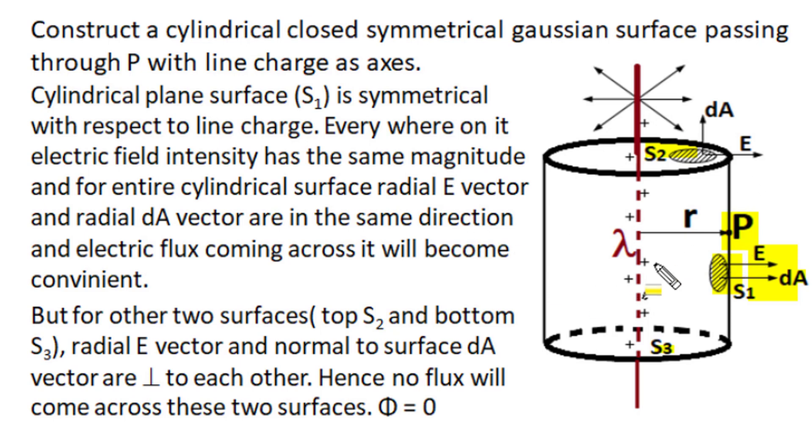we can also get an advantage that everywhere on this cylindrical surface, the magnitude of electric field intensity is the same. Whereas for top and bottom, if we see radial electric field and normal to the surface area vector,